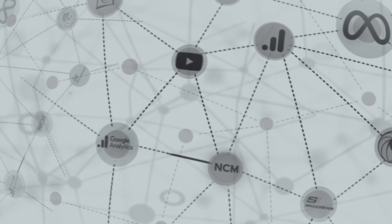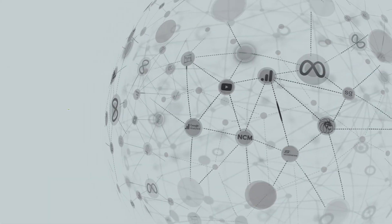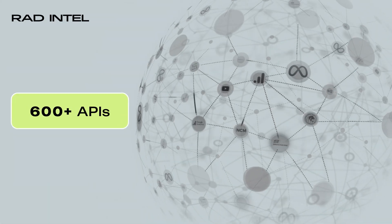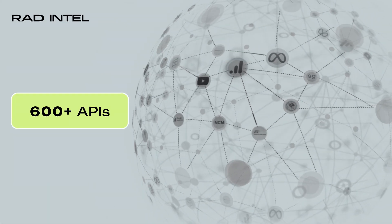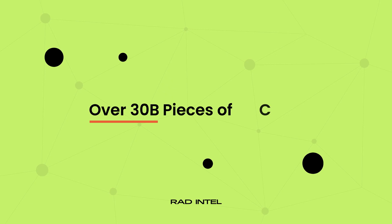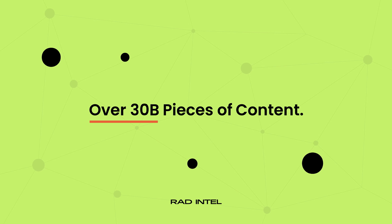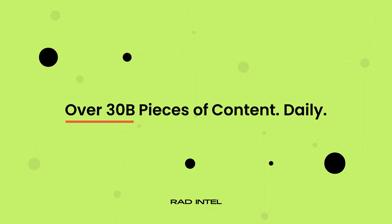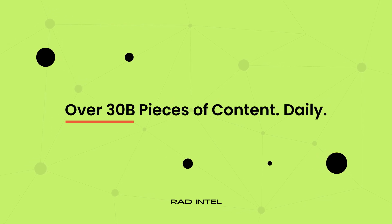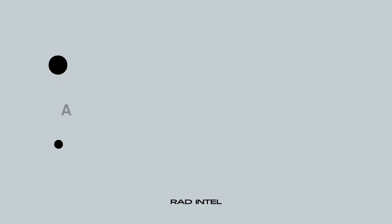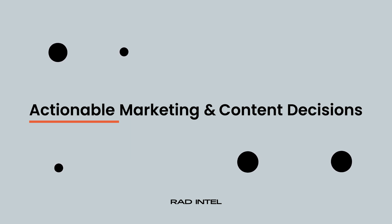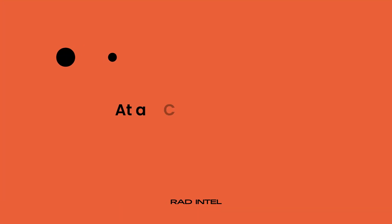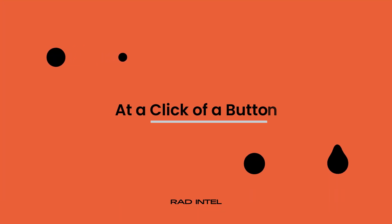Our language learning models have access to over 600 APIs for real-world, real-time content across the web's most popular traffic sources. RAD Intel is trained on these datasets to guide actionable content decisions at the click of a button.